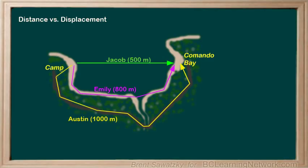Now these numbers represent their distance covered. Since distance doesn't relate to any direction, every meter covered counts towards their total distance. Some of their distance takes them towards the bay and some doesn't — like Austin here actually goes away from the bay as the trail takes him over a bridge. It all counts as part of the distance.